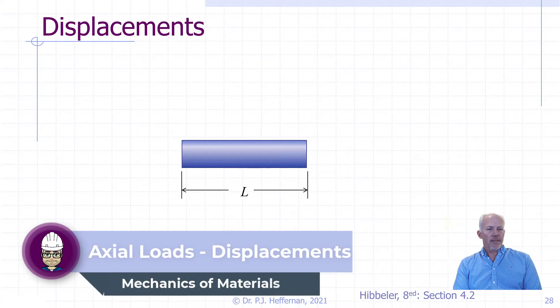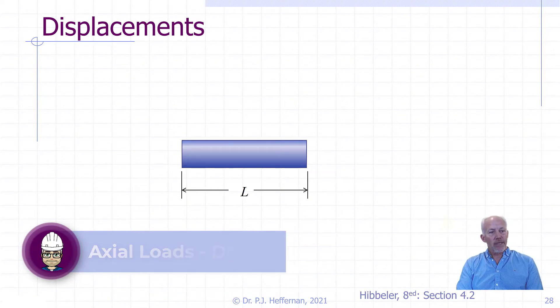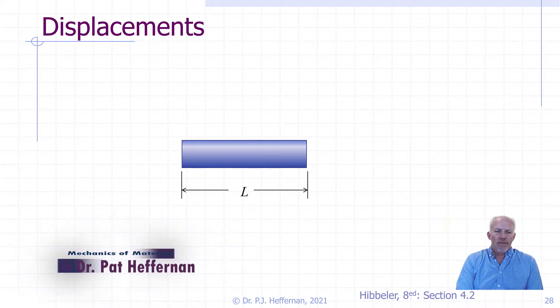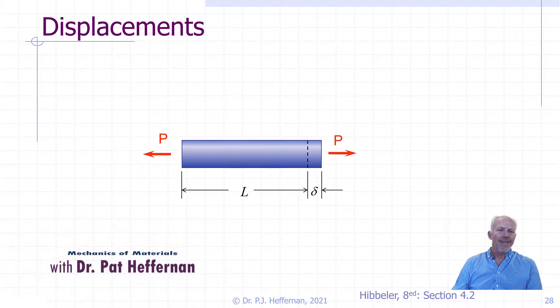So, a little bit about displacements. As we've discussed, stress causes strains, and strains, when integrated over the length of the axially loaded member, exhibit a displacement, often denoted by the Greek letter delta.